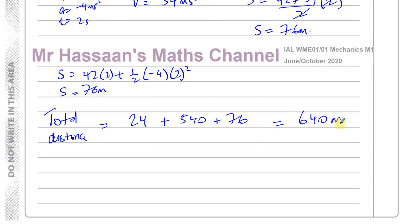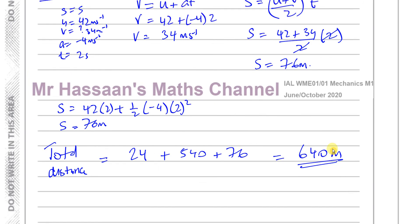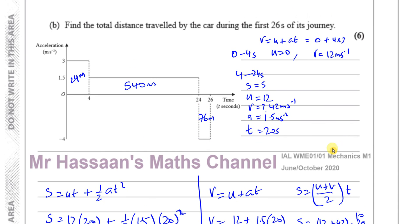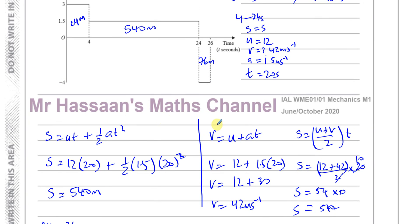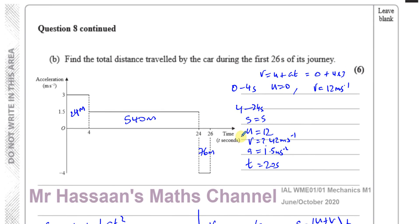Not actually a very difficult question, though it may be different from what people are used to. Acceleration-time graphs are less common, but using SUVAT makes it straightforward, and you have a choice of equations. This completes the last question on this paper. The full playlist and related videos on kinematics, velocity-time graphs, and acceleration-time graphs are available via the links shown.